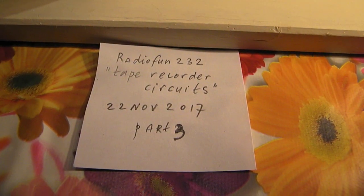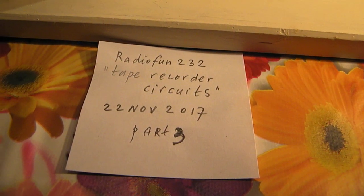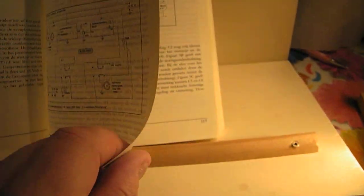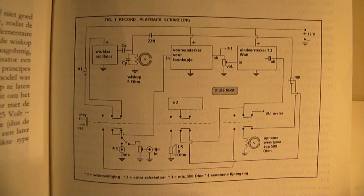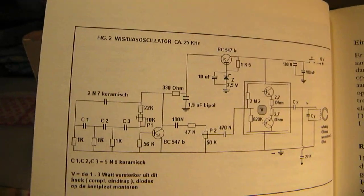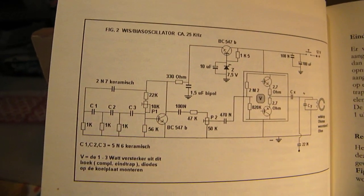Part 3 from tape recorder circuits. The first video was about this overview. Second video the bias oscillator and erase oscillator.